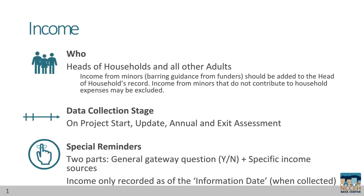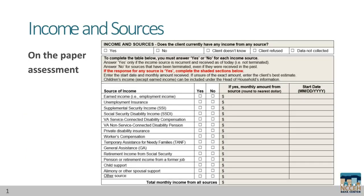Let's see how to use the paper assessments. On the paper assessment for any project type, the gateway question is a general yes or no for income. Follow the instructions to complete the table below with HUD's categories for sources of income. Make sure you mark yes or no on each category. If you answer yes to any of the sources, you must also complete the shaded portions. Remember that the start date is the day the data was collected.